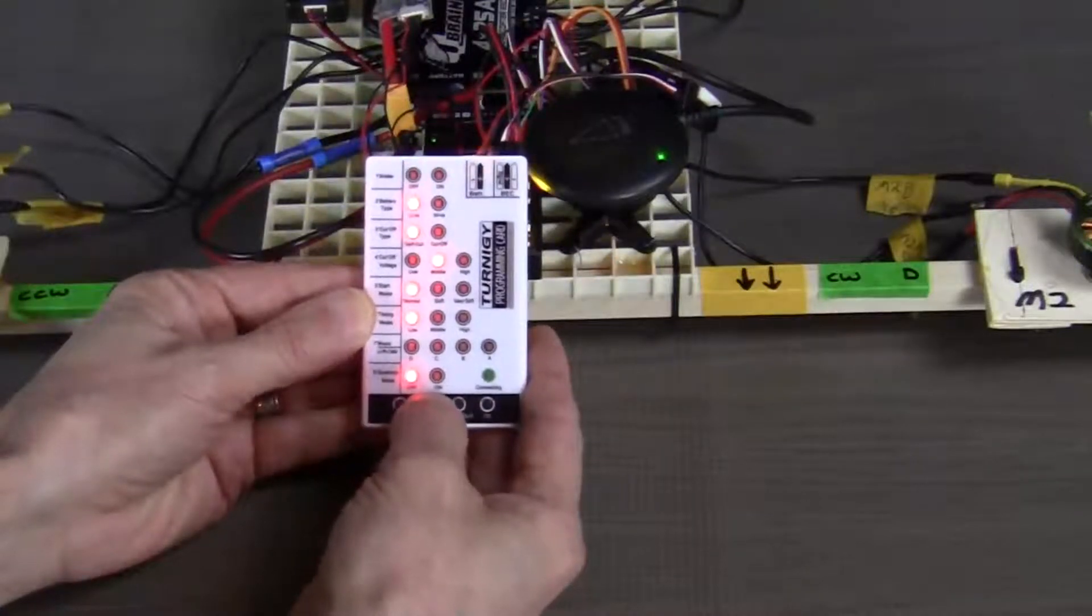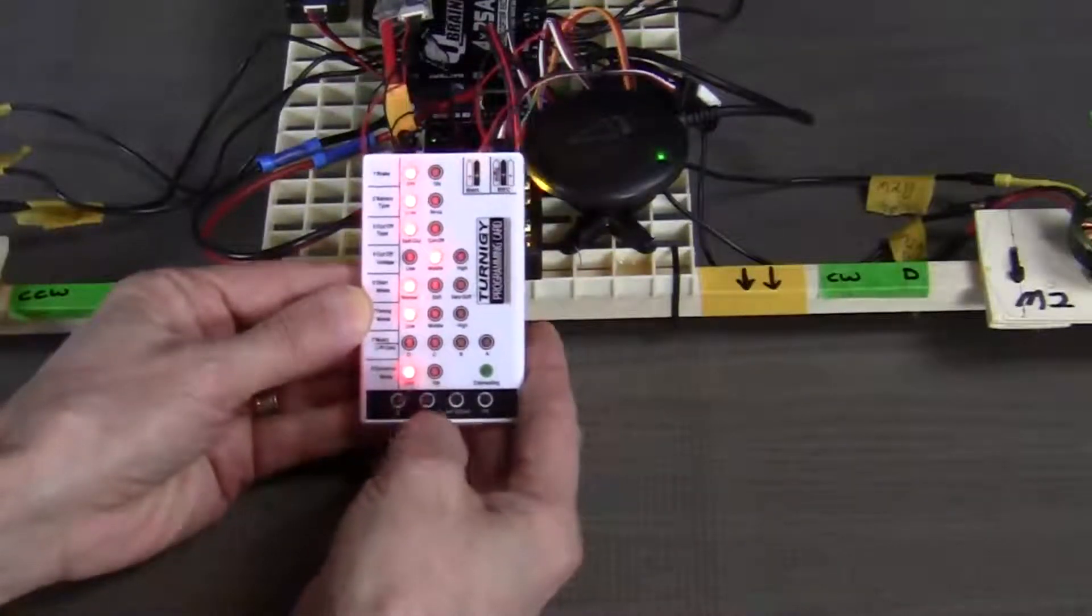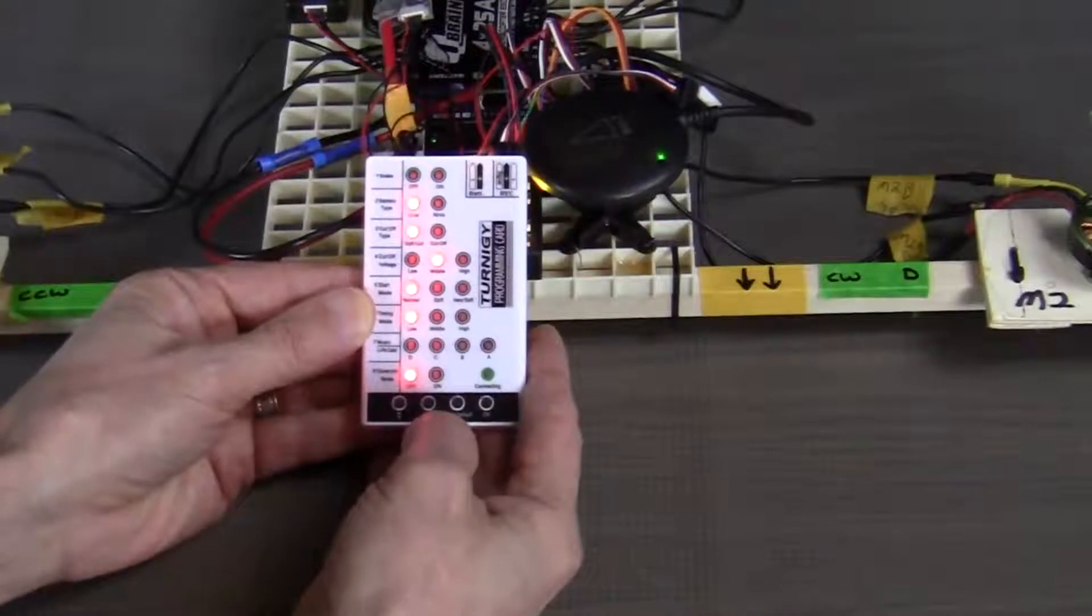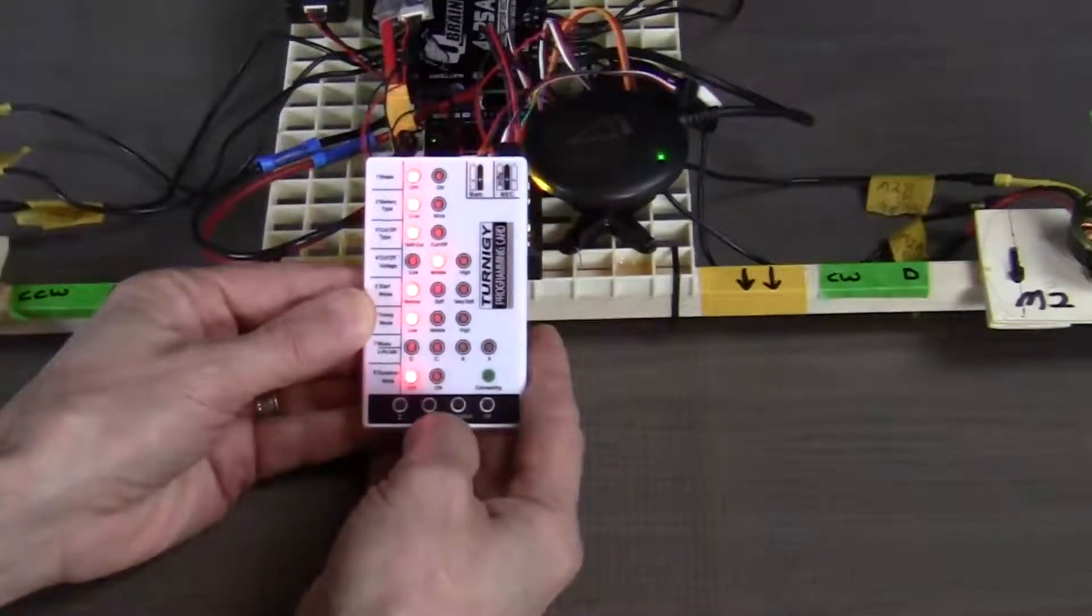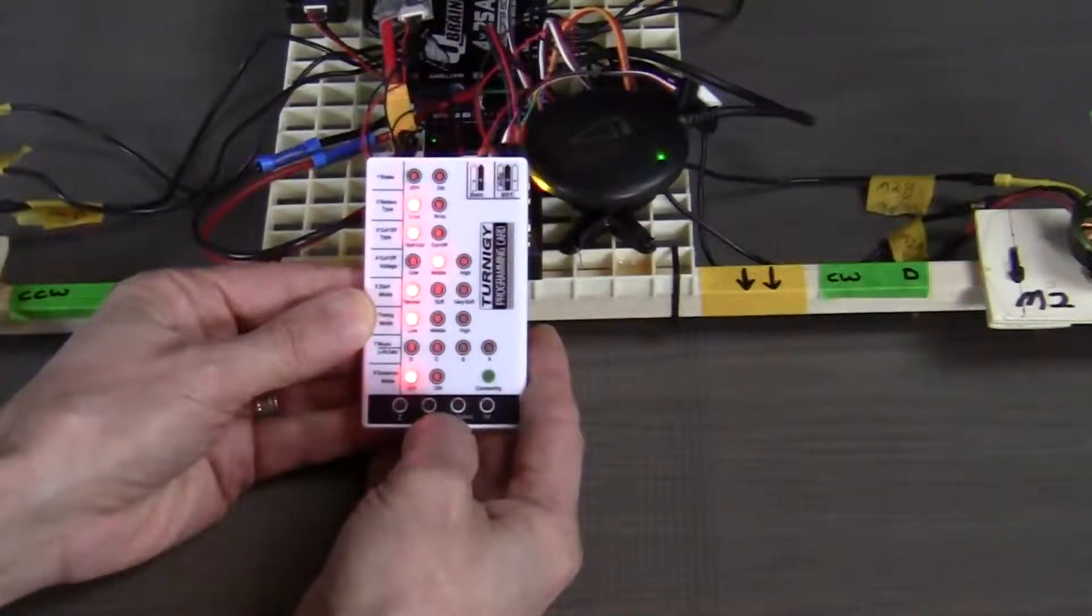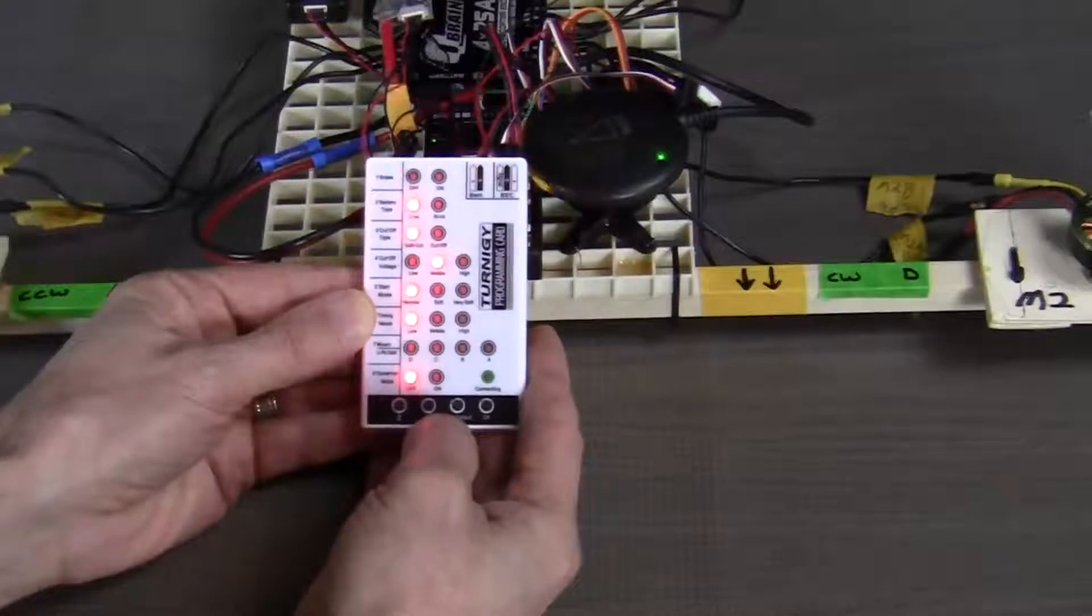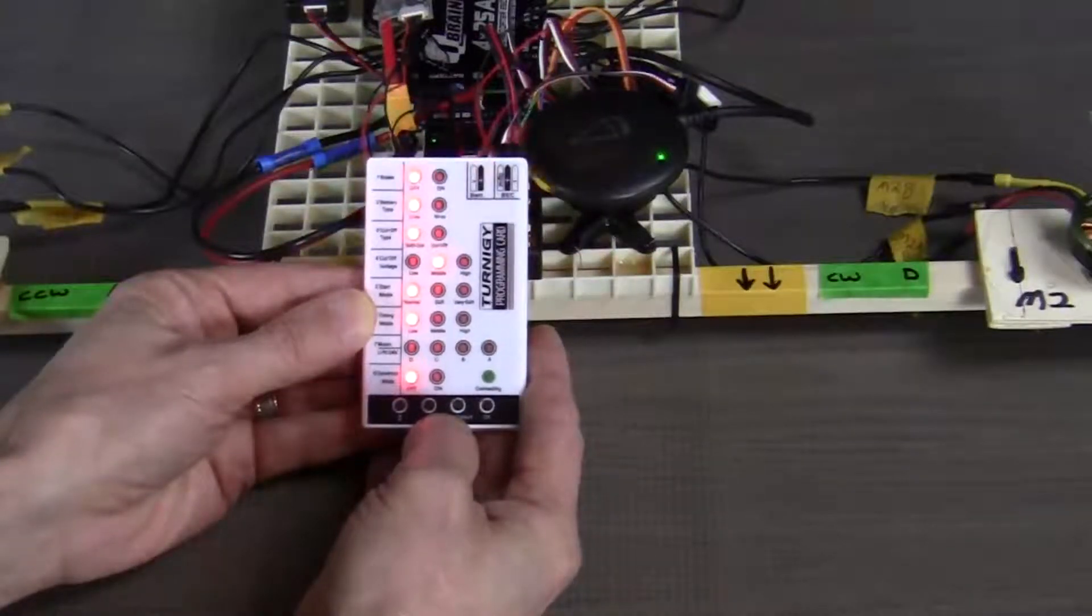Our first option is the brake. When the brake is on, the motors will stop immediately when the throttle stick is moved to the lowest position. For our build, we don't want an immediate cutoff of power to the motors, but rather a gradual one. So we're going to set this to off.